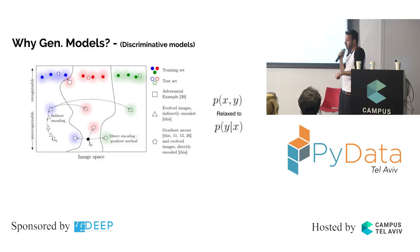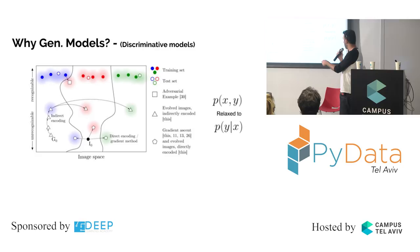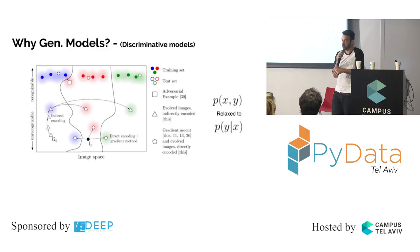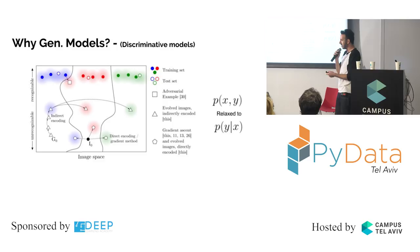Discriminative models take an input and produce one output — for example, is it a dog or a cat? All you're calculating is a hyperplane: anything on the left is a dog, everything on the right is a cat. You don't really understand how dogs and cats look; you just know how to separate them.